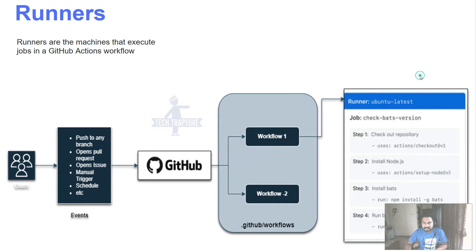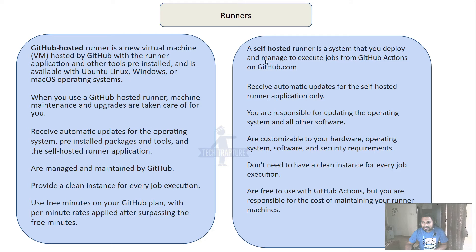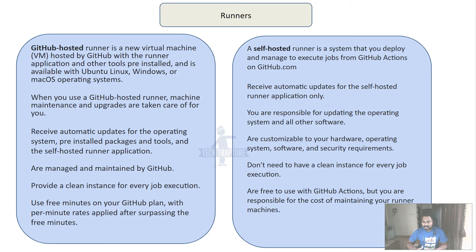There are two types of runners: first is GitHub-hosted runner, and second is self-hosted runner. In simple terms, GitHub-hosted runners are the ones we use by default in our workflow - virtual machines provided by GitHub where we don't need to manage anything. We just mention which OS we need in our YAML file. With self-hosted runners, if we don't want our code executing in a GitHub environment, we can run it in our own cloud environment, like a Google Cloud VM or a GKE cluster.